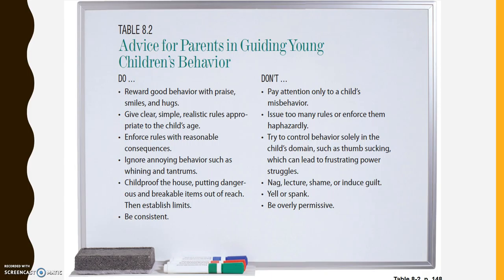Some advice for guiding your toddler or young child's behavior: reward and praise with hugs and smiles, give clear and simplistic rules, enforce the rules with reasonable consequences, try to ignore annoying behaviors, childproof the house, and be consistent. Don't pay attention only to the bad — catch them when they're being good. Not too many rules, because they just get confused. Try to control behavior that the child can actually control — for instance, don't focus on things like thumb sucking. Don't nag or lecture; they're too young for that and will just feel guilty. Try not to yell or spank, and don't be overly permissive. This is advice from what the research says.